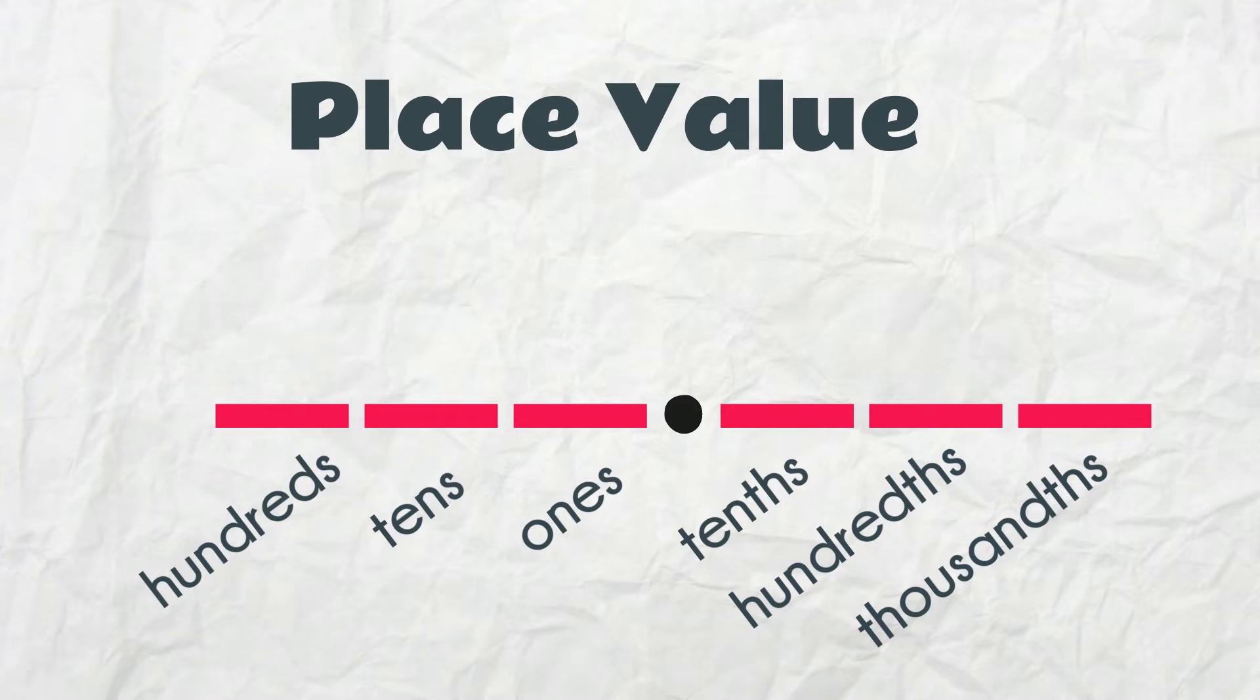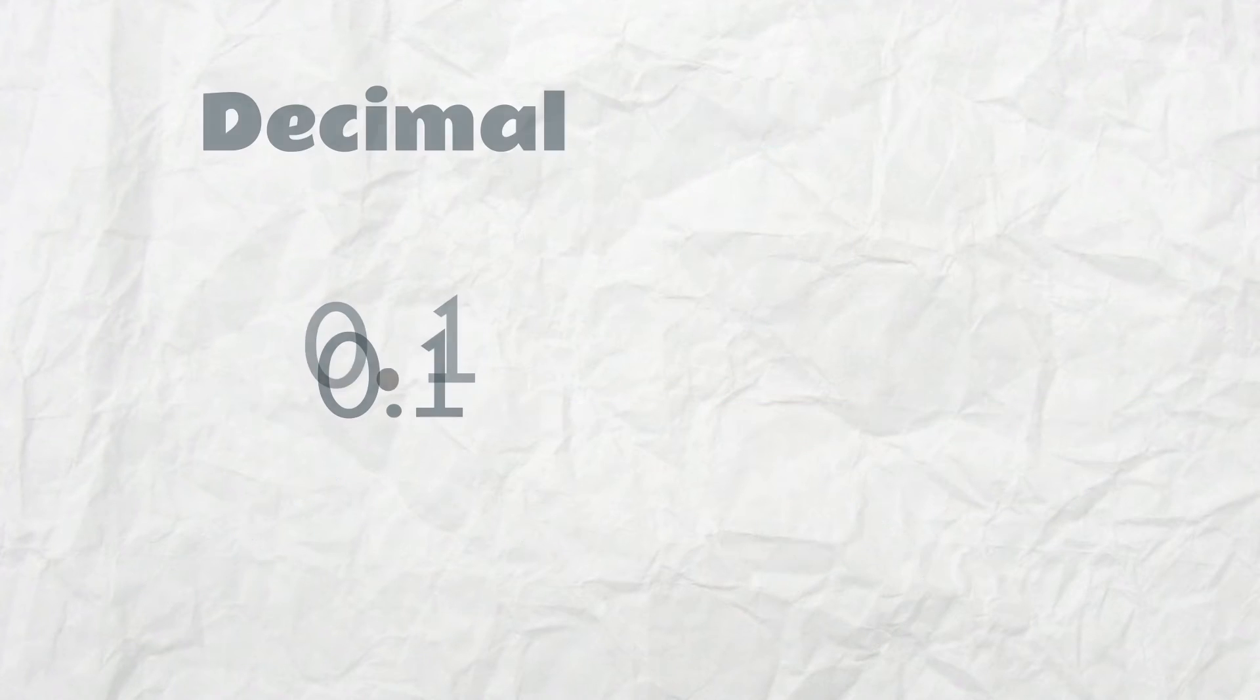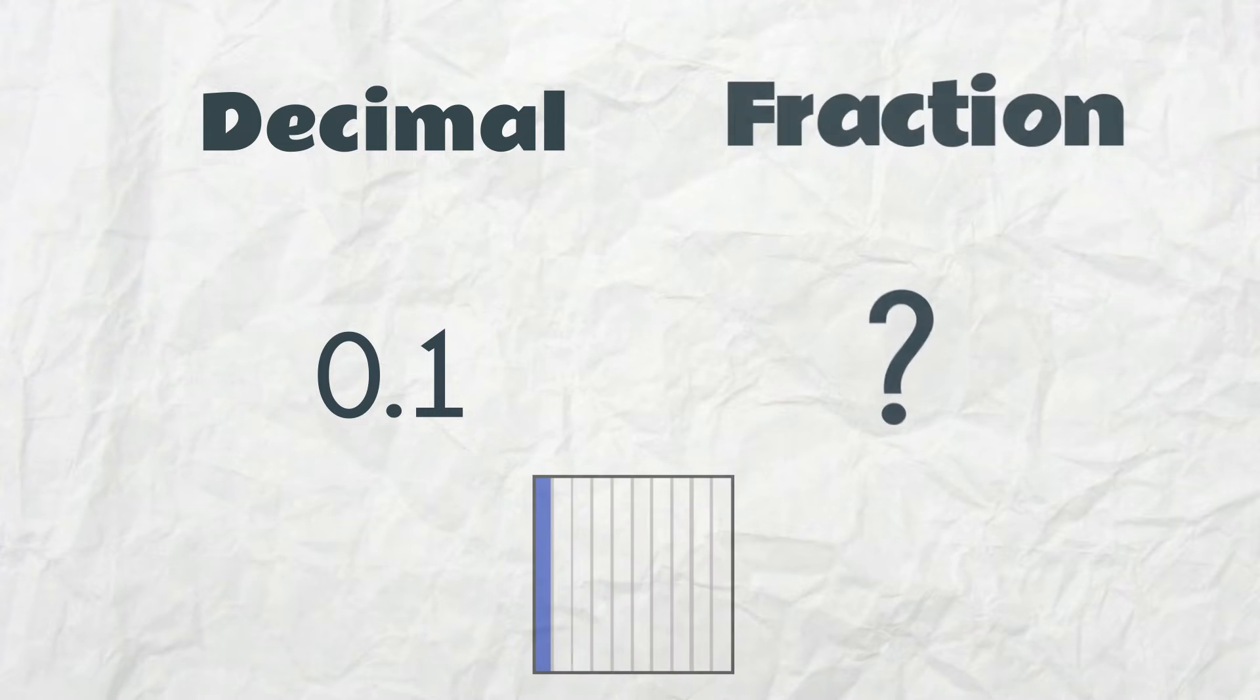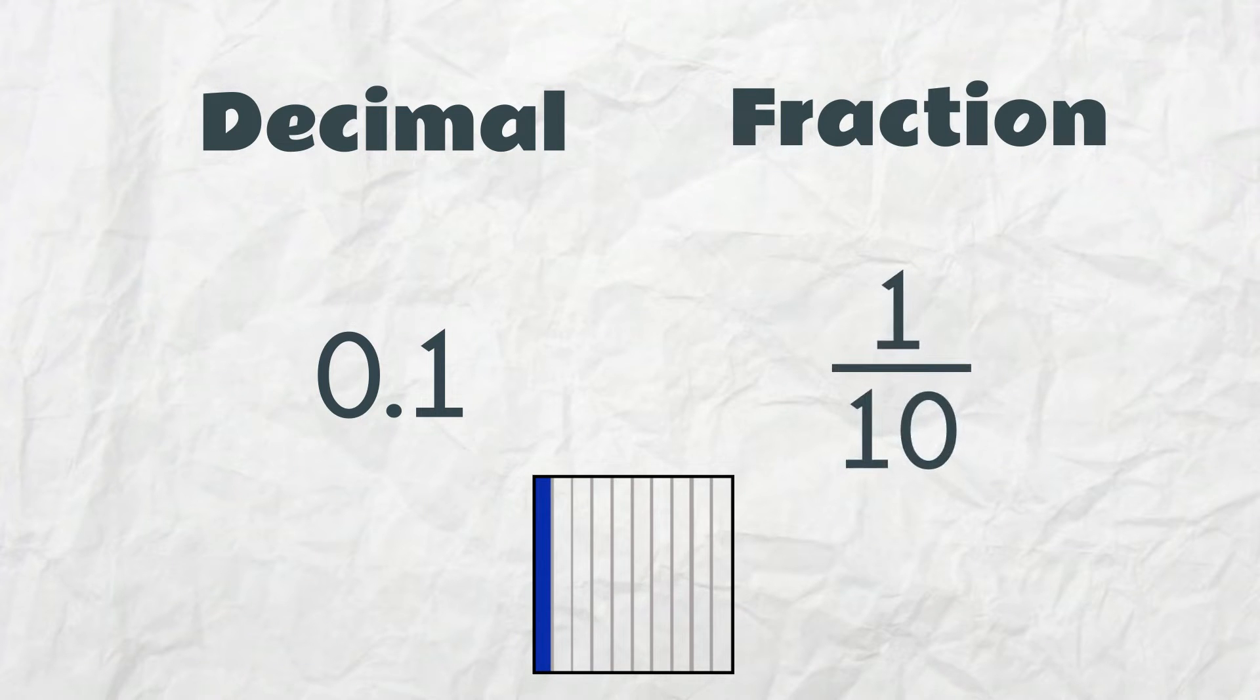Take this decimal, 0.1. It can also be read as 1 tenth because this is the tenths place. What does 1 tenth look like as a fraction? You guessed it, 1 over 10.